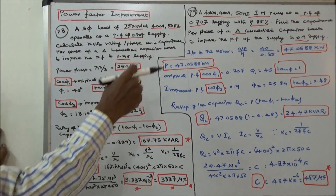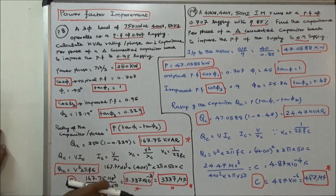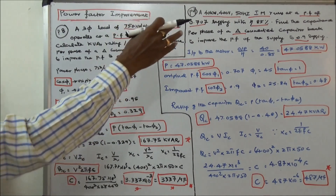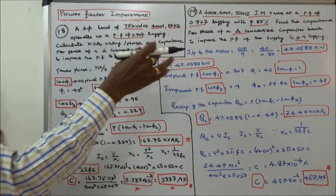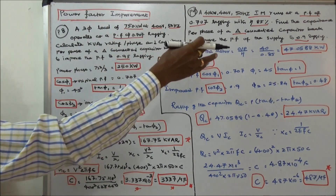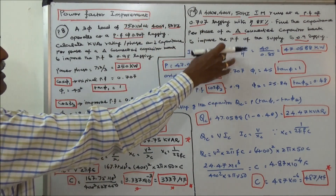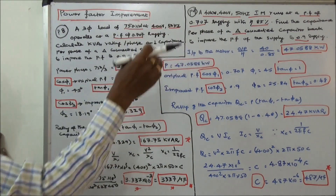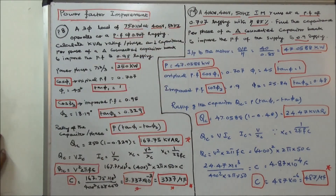Second problem: a 40 kW, 400 V, 50 Hz induction motor runs at a power factor of 0.707 lagging with efficiency 85%. Find the capacitance per phase of a delta connected capacitor bank to improve the power factor of the supply to 0.9 lagging. Here we have to calculate the input of the motor. Efficiency is given 85%, output is 40 kW. So input is 40 divided by 0.85, equal to 47.0588 kW. That is P.